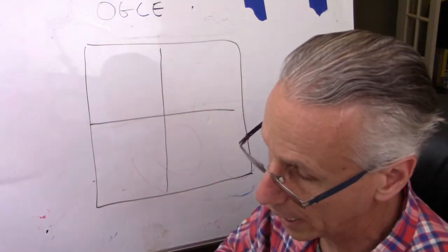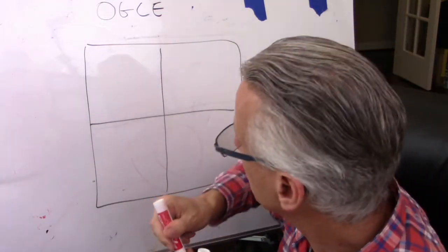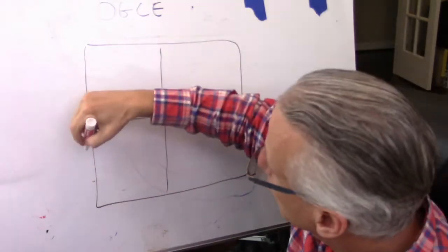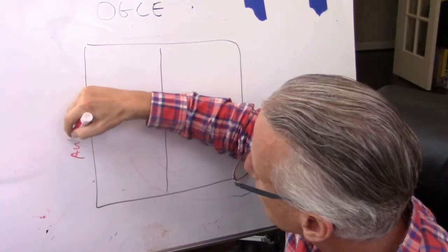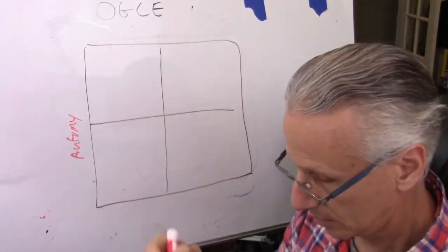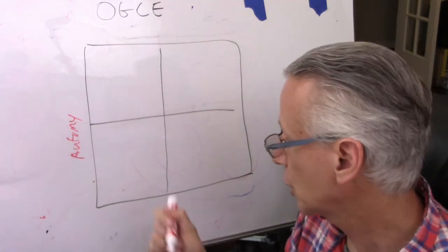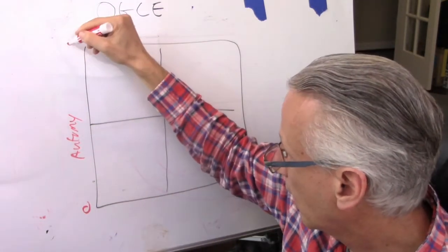On one axis, we have autonomy. This is the level of autonomy that organization or groups will have. Could be within a group, it could be within organization, low, high.